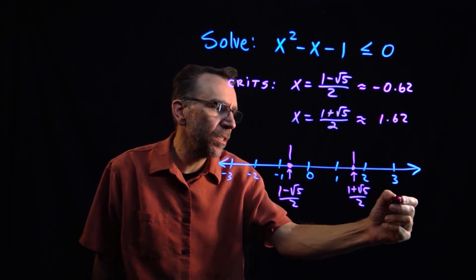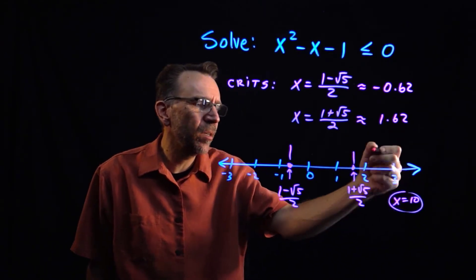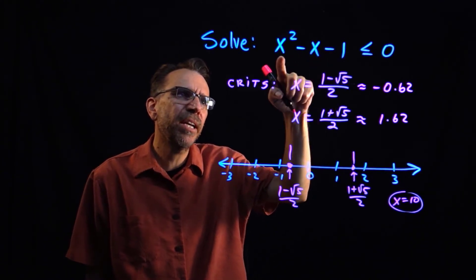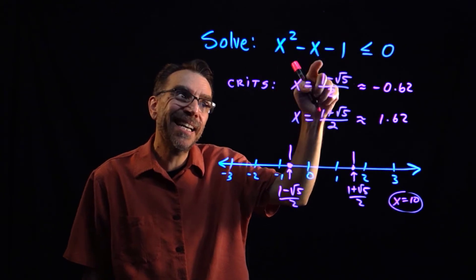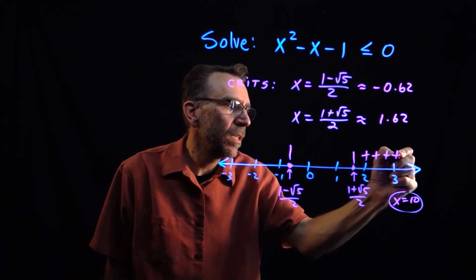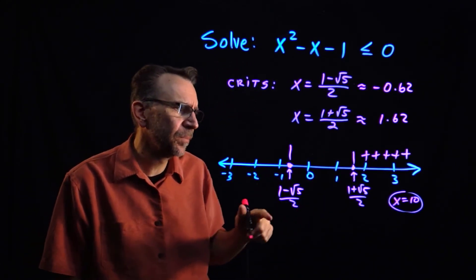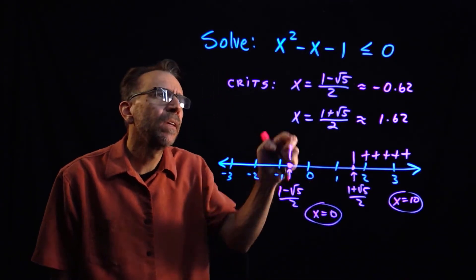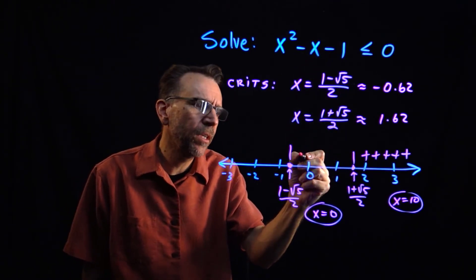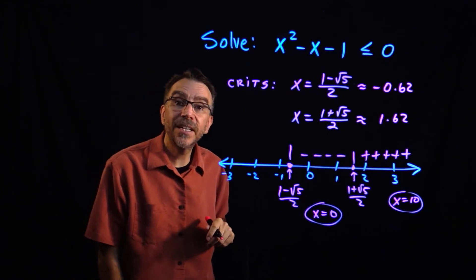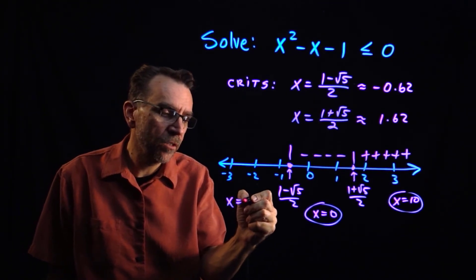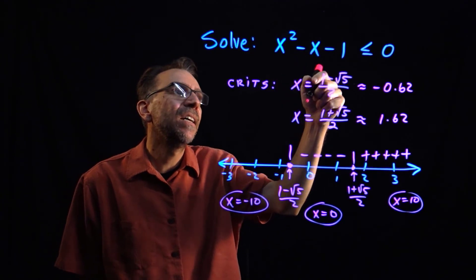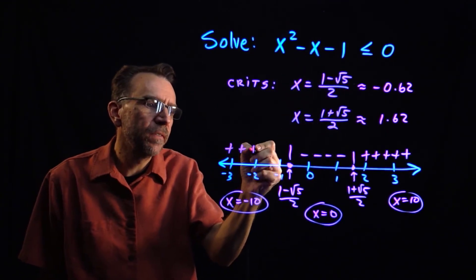I'll take any number in the right region — say 10. Substituting into x squared minus x minus 1: 100 minus 10 minus 1 equals 89, which is positive. Any number in that interval gives positive results. In the middle region, I'll test 0: 0 minus 0 minus 1 equals negative 1, so that interval gives negative results. On the far left, I'll test negative 10: 100 plus 10 minus 1 equals 109 — definitely positive.